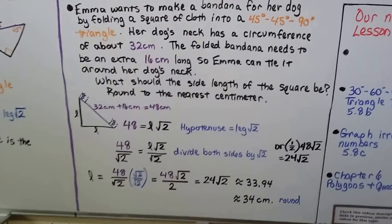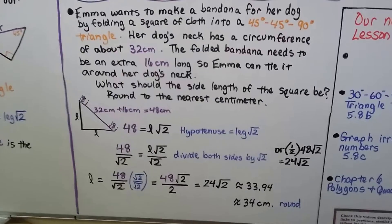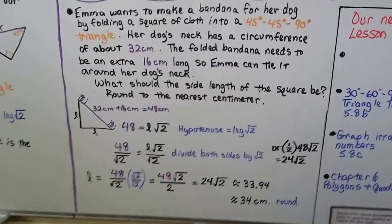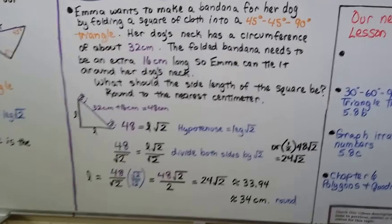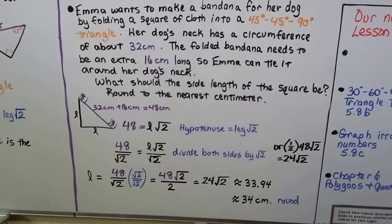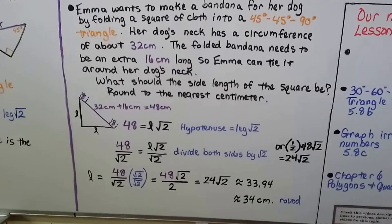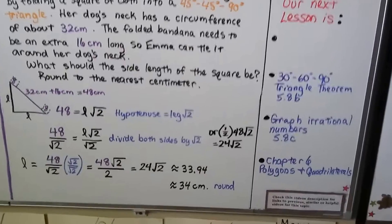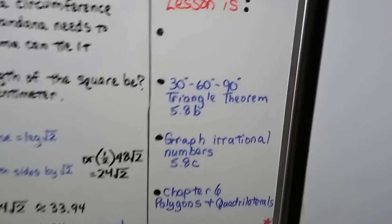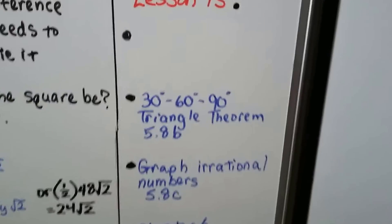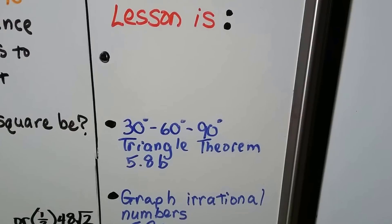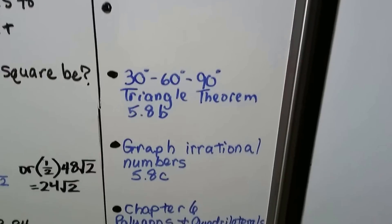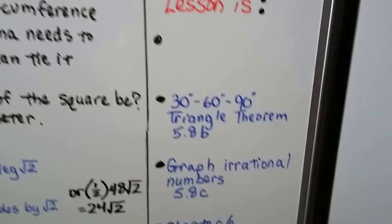You can decide whether to use the multiplication or division approach. Your teacher may want to see the division method just to make sure you know how to do it — not to punish you, but to confirm understanding. You can always check with multiplication. Our next lesson covers the 30-60-90 triangle theorem, then we'll graph irrational numbers, and then we'll be in chapter 6.